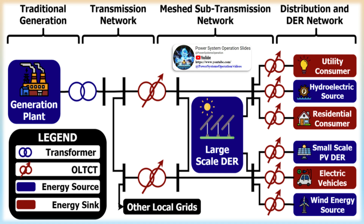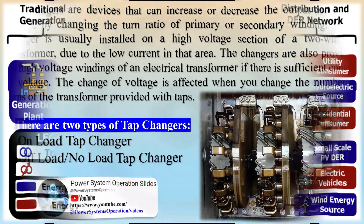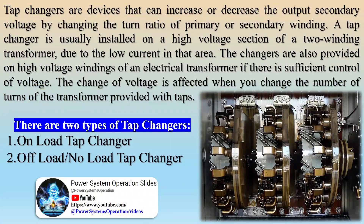On-load tap changers (LTC or OLTC) regulate the turns ratio and thus the voltage ratio of an electrical transformer. Unlike their no-load counterpart, on-load tap changers do this without interrupting the load current. There are two main load tap changer designs: the reactance and the resistive types.